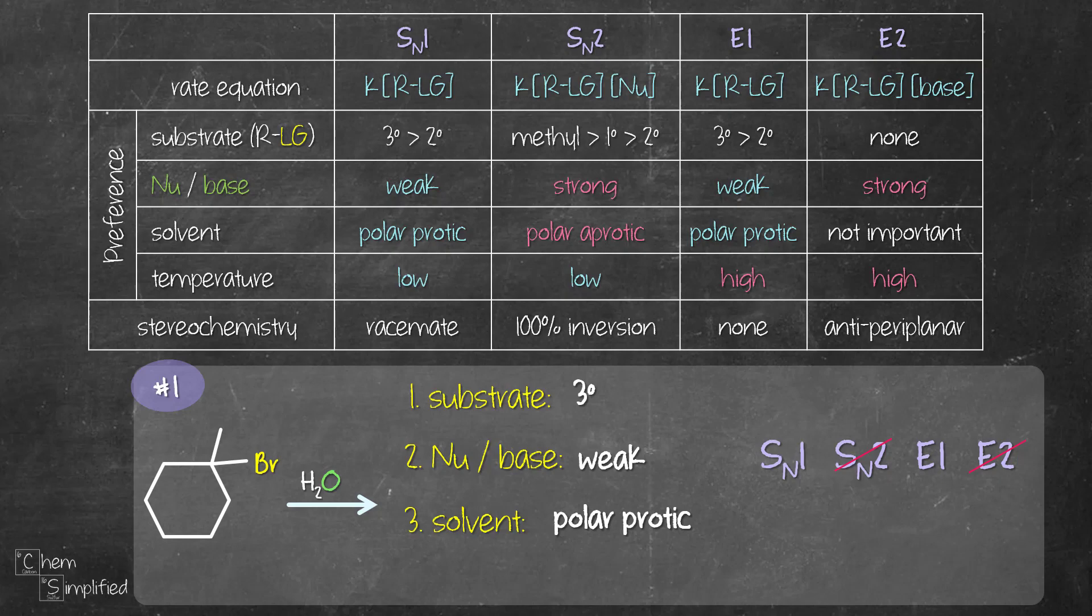Lastly, to decide whether SN1 or E1 will dominate, we look at the temperature. Since there is no heat indicated, that means SN1 will dominate over E1. We're gonna get a mixture of products from SN1 and E1. However, the major product that is formed is gonna come from SN1 mechanism.